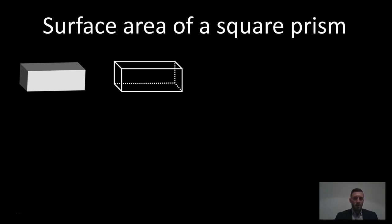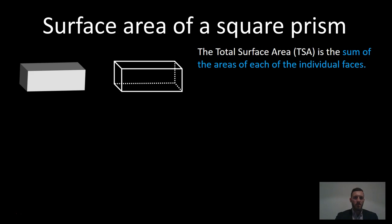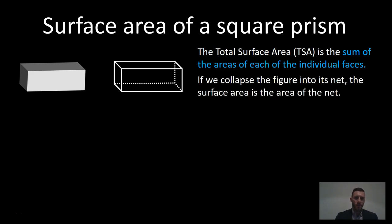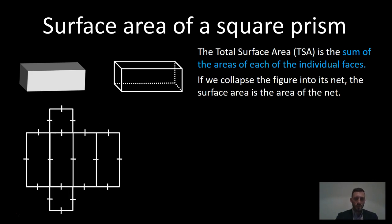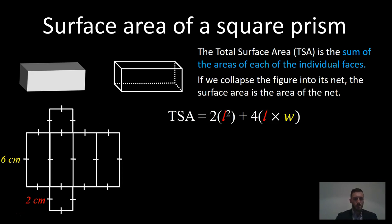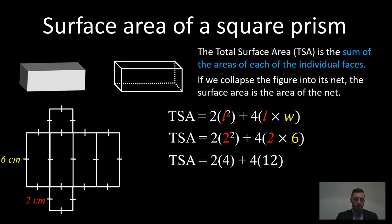Let's find the surface area of a square prism. It's called a square prism because the ends are squares. The total surface area is the sum of the area of each of the individual faces. We collapse it into a net and work out the area of each side. We've got two sides which are squares and four sides which are rectangles. So we use two times length squared for the squares, plus four times length times width for the rectangles. Substituting in our known values, the area of this square prism is 56 centimetres squared.